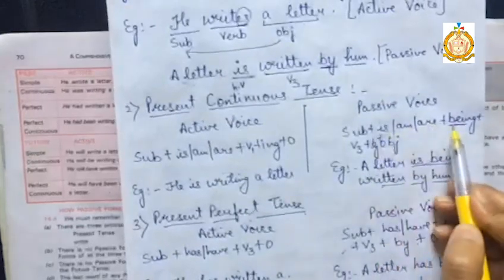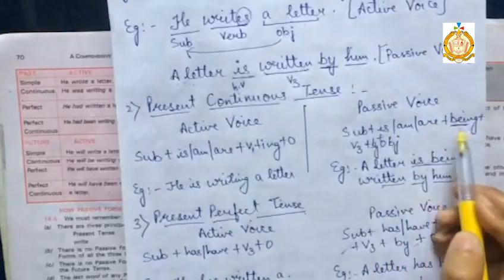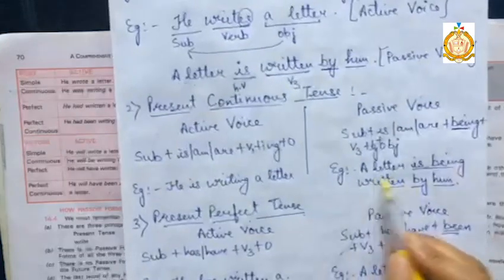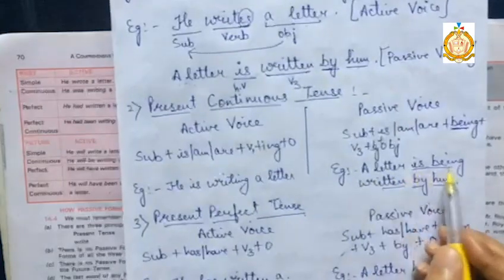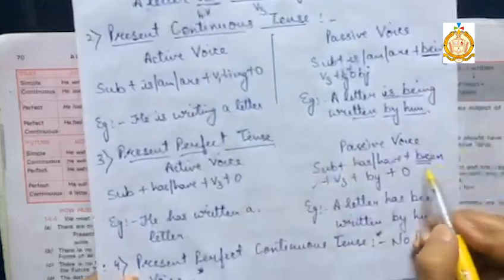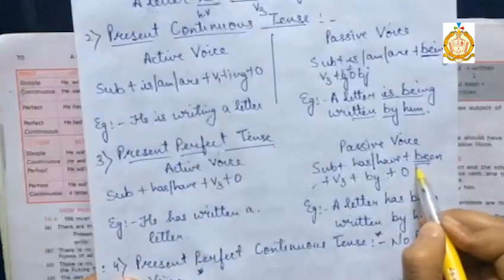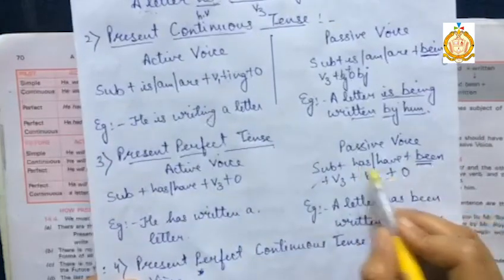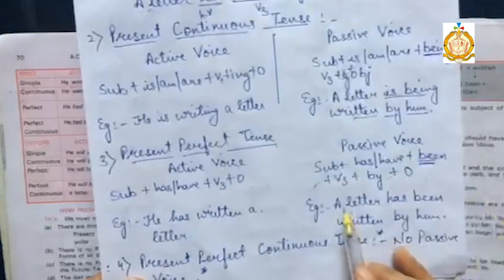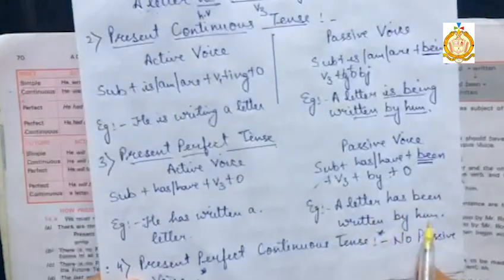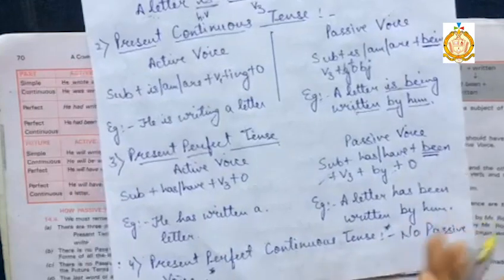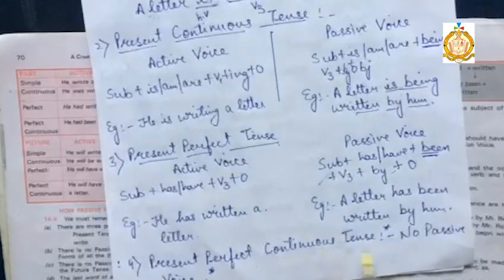Next, if the sentence is in present continuous tense, the only change will be the addition of the word 'being' — rest of the things remain the same. So it becomes: 'A letter is being written by him.' If the sentence is in present perfect tense, 'been' is applied — has/have + been — so it becomes: 'A letter has been written by him.'